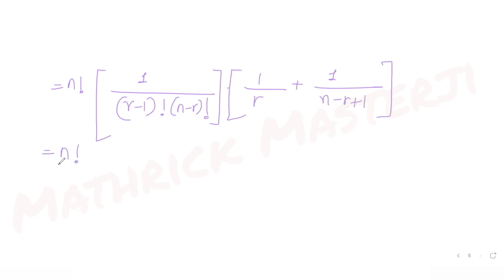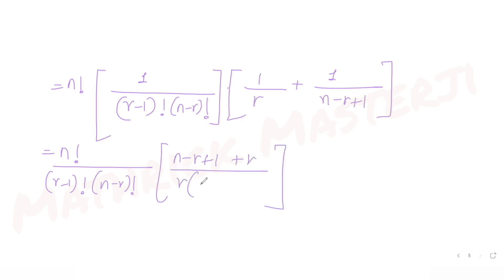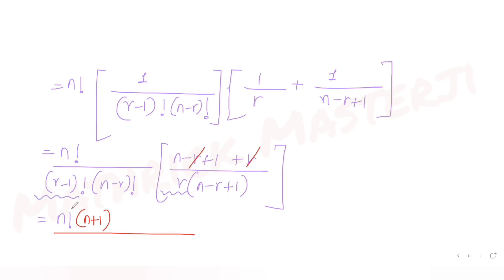So we get n! / ((r−1)! × (n−r)!) × [(n−r+1 + r) / (r × (n−r+1))]. The numerator simplifies to n+1, and the r in the denominator combines with (r−1)! to give r!, while (n−r+1) × (n−r)! becomes (n+1−r)!.